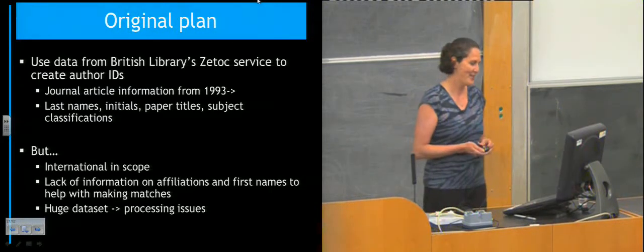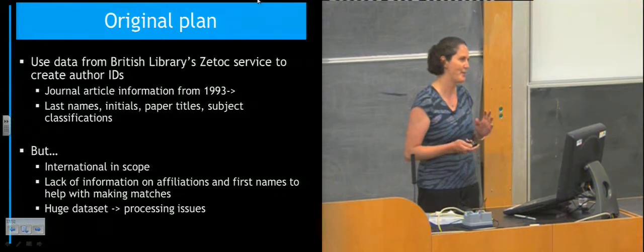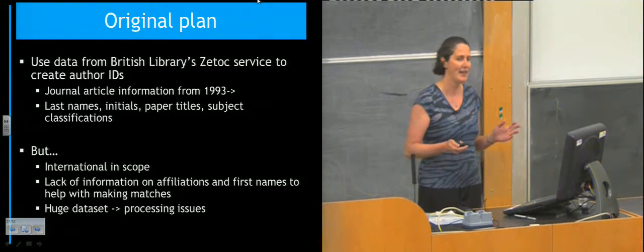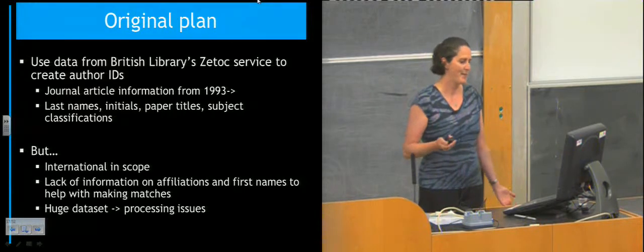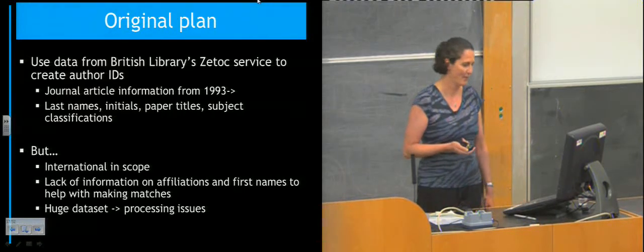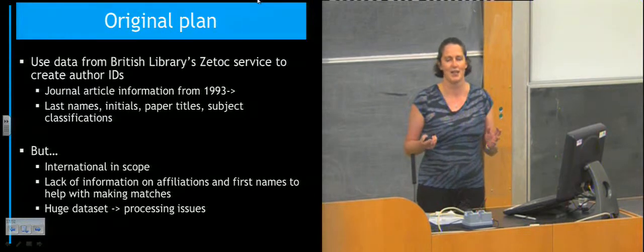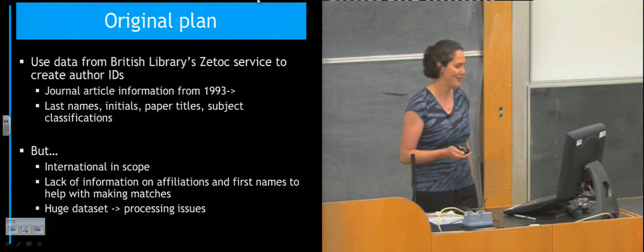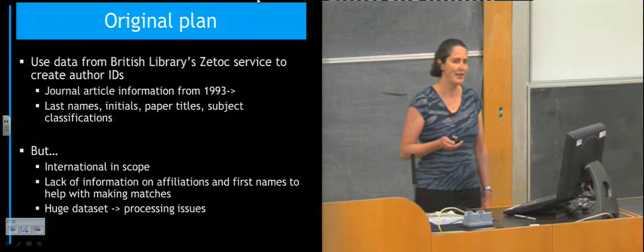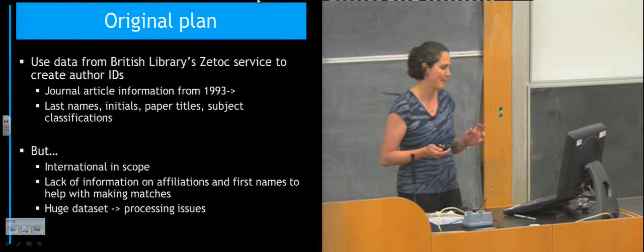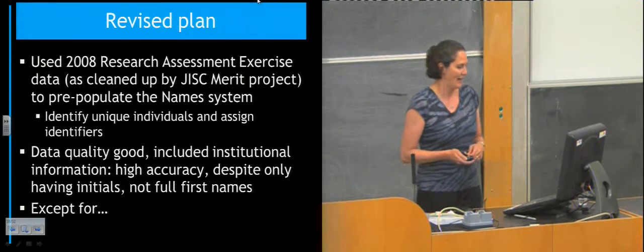The original plan was to use the British Library's ZTOX service — an electronic table of contents service containing information about journal articles dating back to 1993. We thought this would be a wonderful set of data to work with, as it's people writing research articles. It has last names, initials, titles, subject classifications, and so on. But in the end it turned out to be just too big to use for the NAMES project, and it's international in scope — every researcher in the whole world who's written an article in the British Library. There was no information on affiliations, and because it's only got initials, that makes it very difficult to find definite matches, causing processing issues. So we scrapped that plan and came up with a revised plan.